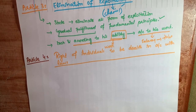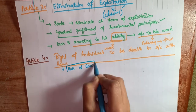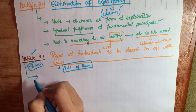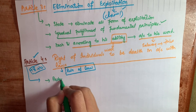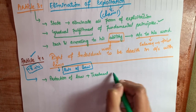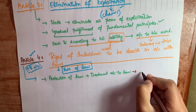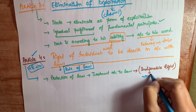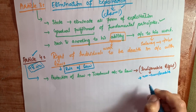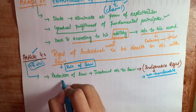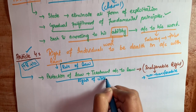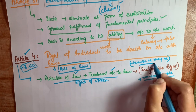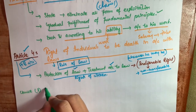Agar CSS ke questions mein ya kisi bhi exam mein puchha jaye keh rule of law kaunse article se deal karta hai, toh aap kahenge Article 4. Iske ilawa Article 8 aur Article 10 bhi rule of law ke according hain. Article 4 Clause 1 kehta hai: to enjoy the protection of law and to be treated in accordance with law is the inalienable right of every citizen — yani non-transferable right, koi bhi yeh right nahi chheen sakta, chahey woh Pakistan ki territory ke andar ho ya bahar.